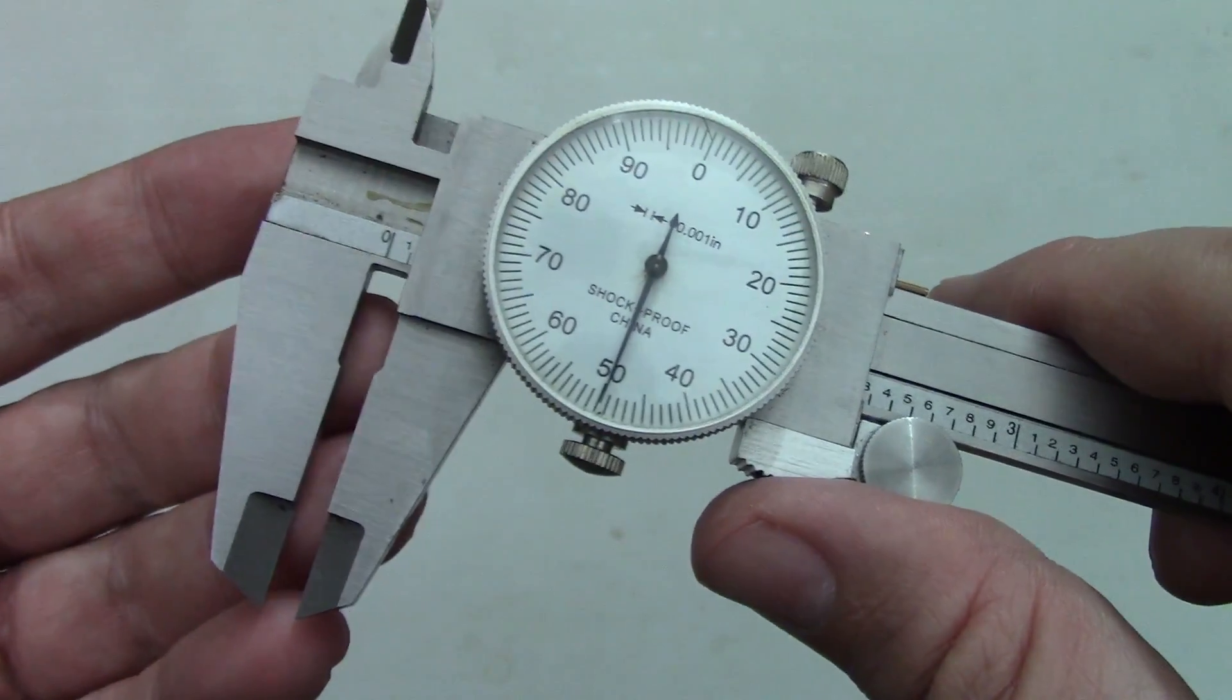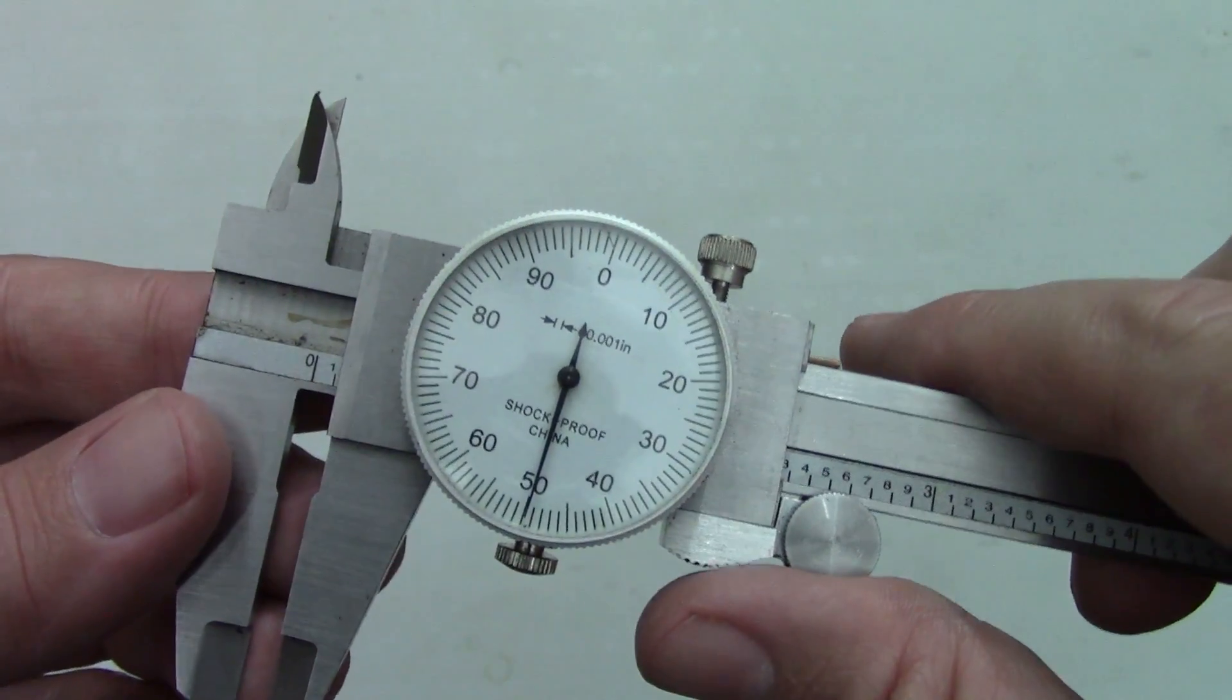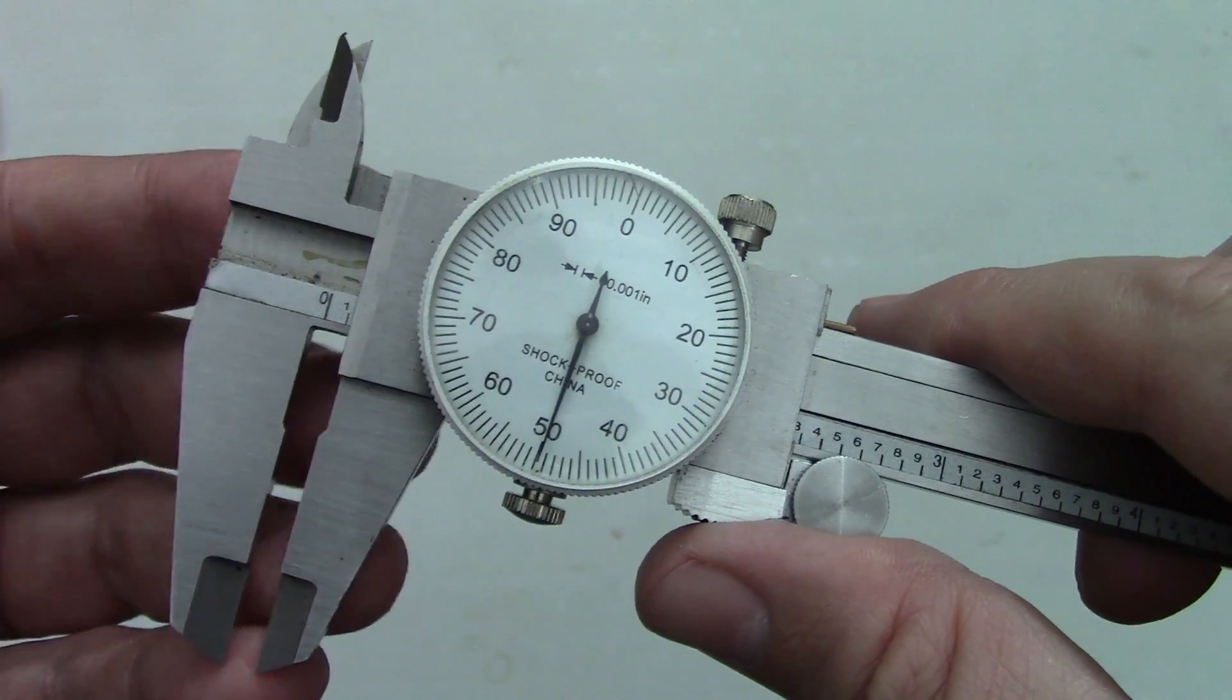You can see this on this old beat up pair of calipers that's not been taken care of. Obviously, these calipers can no longer be trusted to make accurate measurements and will need either repair or replacement. The same thing can actually happen to dial indicators as well.